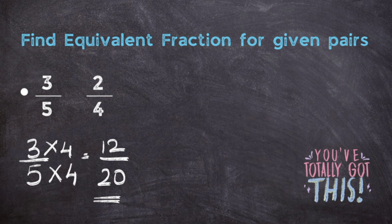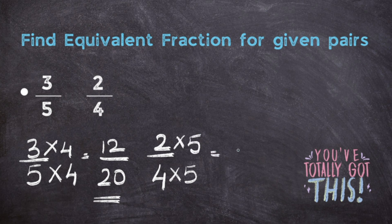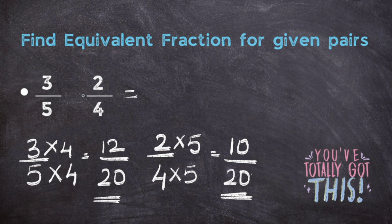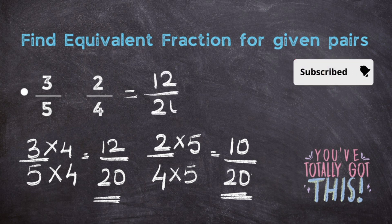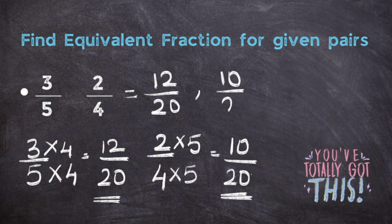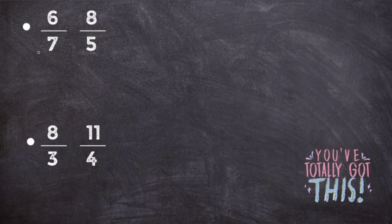Now for the other fraction, two upon four — I check the denominator of the second fraction. Here I will do the same thing: take the fraction two upon four and check the denominator of the other fraction, which is five. So I will multiply both numerator and denominator by five. Two into five is ten and four into five is twenty. So this is the second equivalent fraction. The two equivalent fractions for three upon five and two upon four are twelve upon twenty and ten upon twenty.